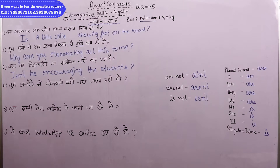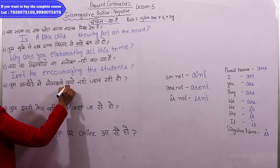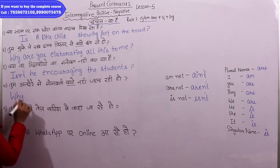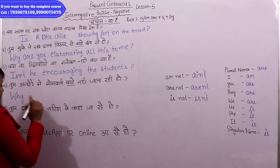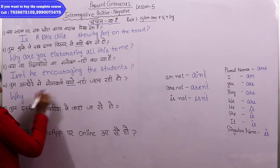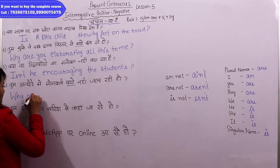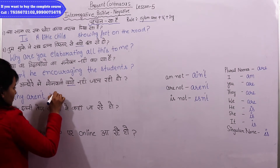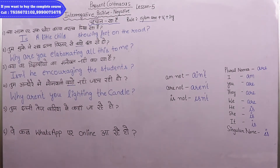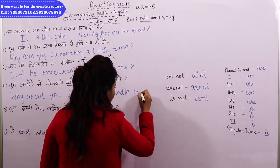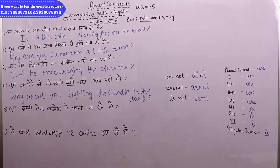Sentence number four: 'Tum andhere mein mombatti kyun nahi jala rahi ho?' 'Kyun' means 'why' — WH word comes first. With 'you', the helping verb is 'are'. It is a negative sentence, so we use 'aren't'. The final sentence: 'Why aren't you lighting the candle in the dark?'